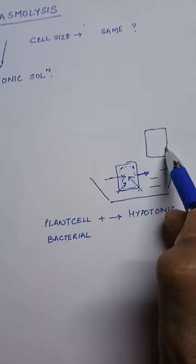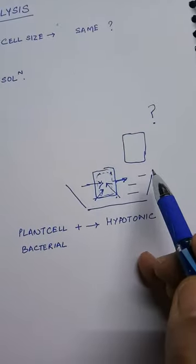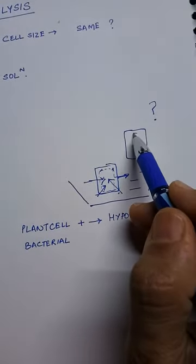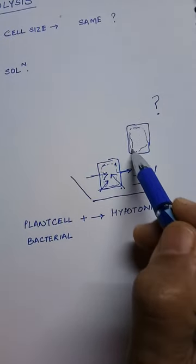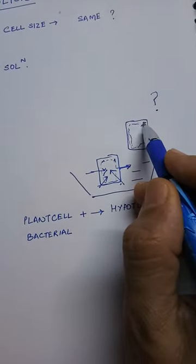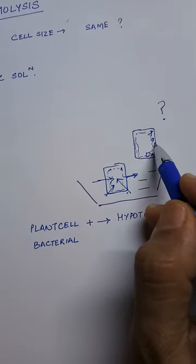And what will happen to the cell size? Can you guess what will happen to the cell size? As it will gain water, it will swell. Contents will swell and they will put pressure against the cell wall.